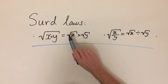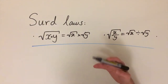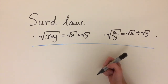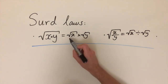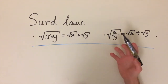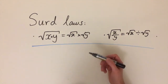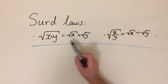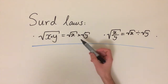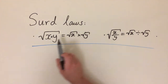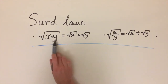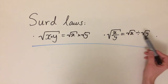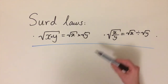Today we'll be looking at the surd laws. A surd is an irrational number which cannot be simplified — its simplest form is leaving it as a root, such as a square root or a cube root. We can still simplify surds by using the two surd laws: the law of multiplication, where if you multiply two surds together that's the same as multiplying the numbers inside the root, and similarly the law of division, where if you divide two surds you can just divide the numbers inside the root.